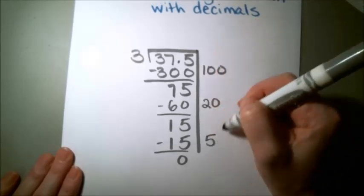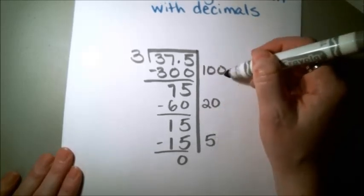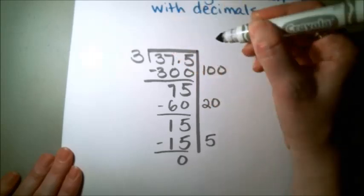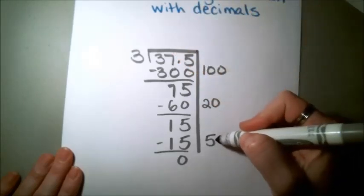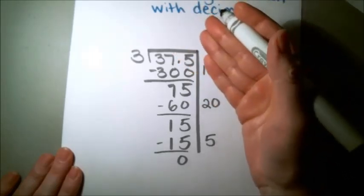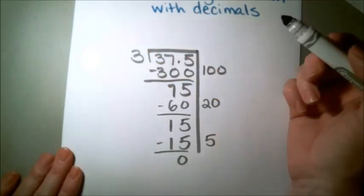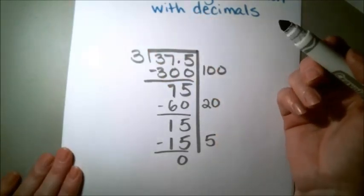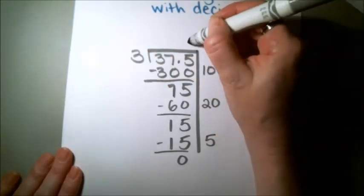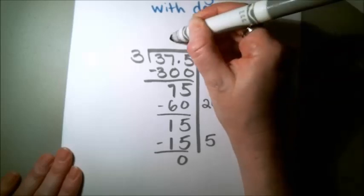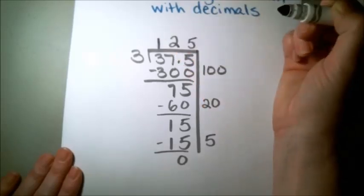I'm just going to add up how many 3's I took out over here on the side. What I always do is I start at the right and work my way over. That way I know I have my place values in the correct spots. So I've got 5 1's, I've got 2 10's, and I've got 1 100.